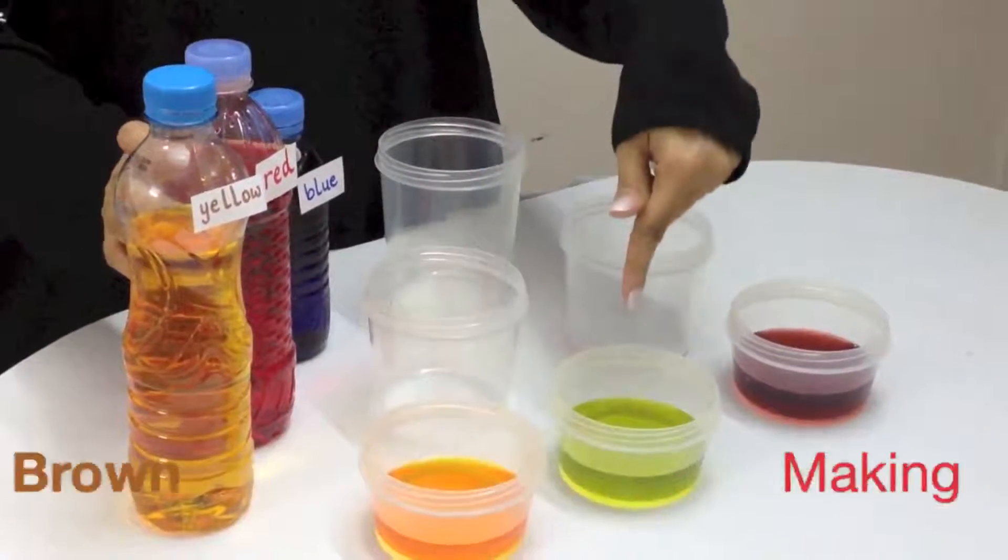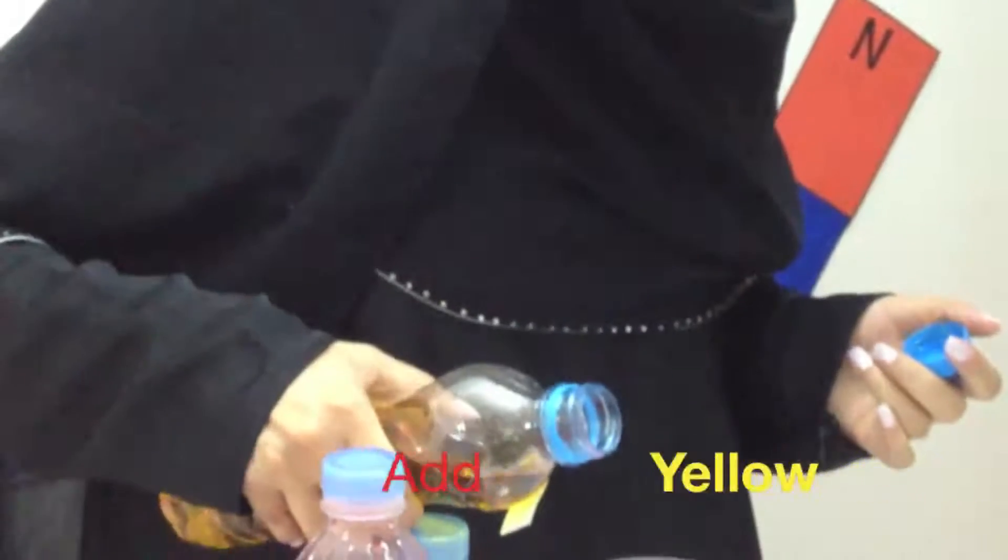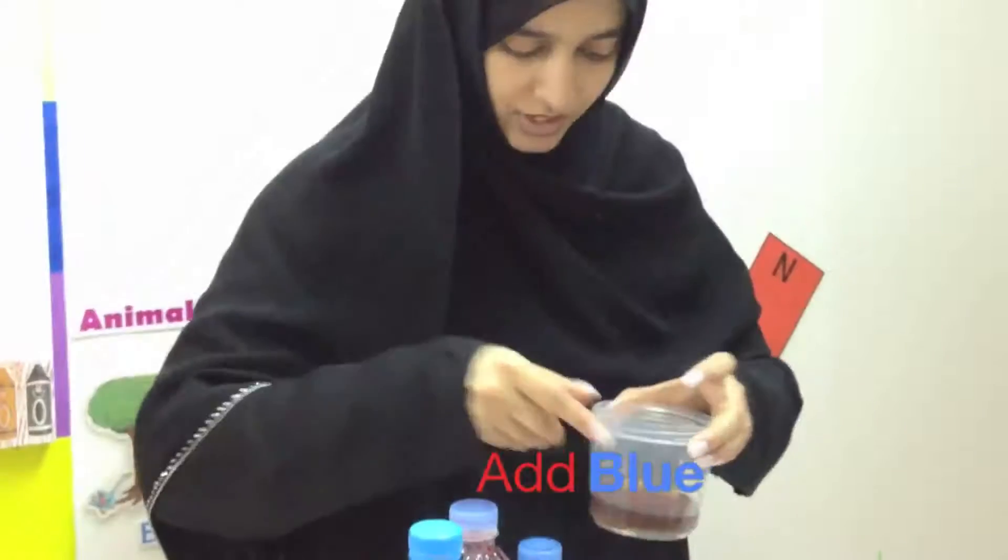We get brown by mixing orange and green. So first we need to make orange. Now I'll add blue to get brown.